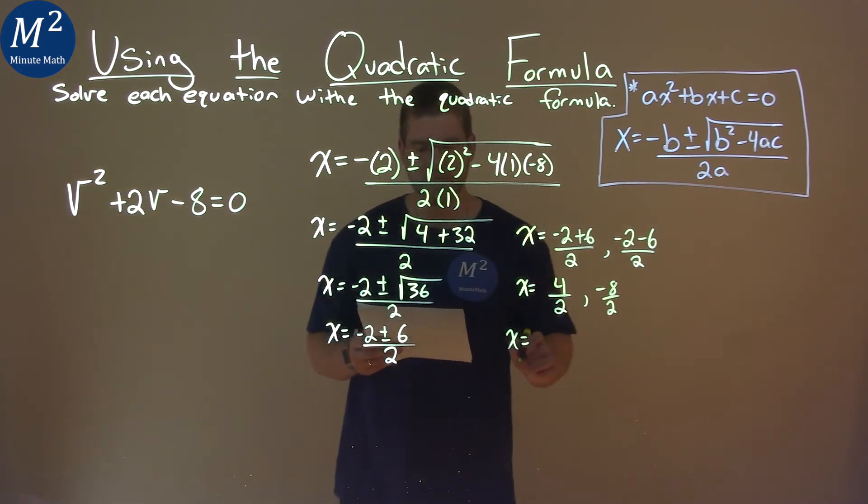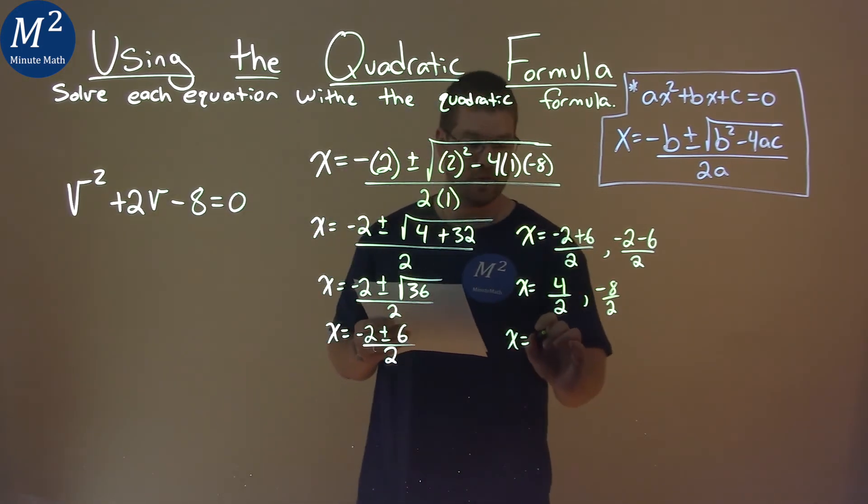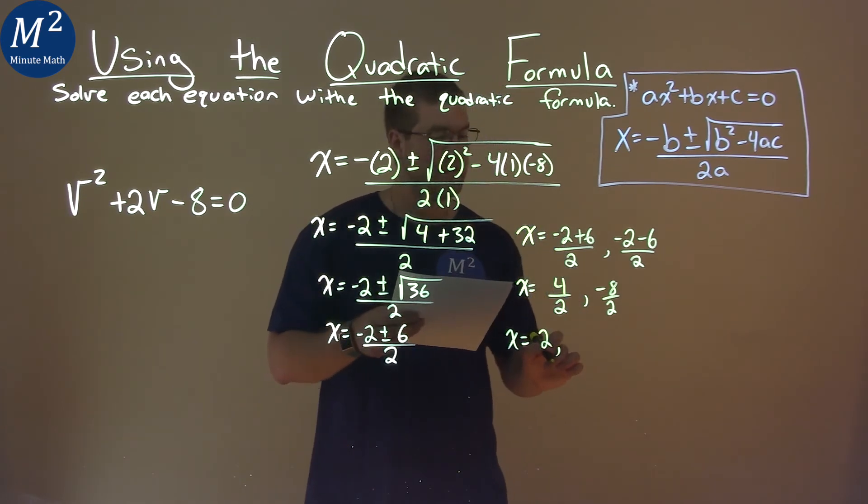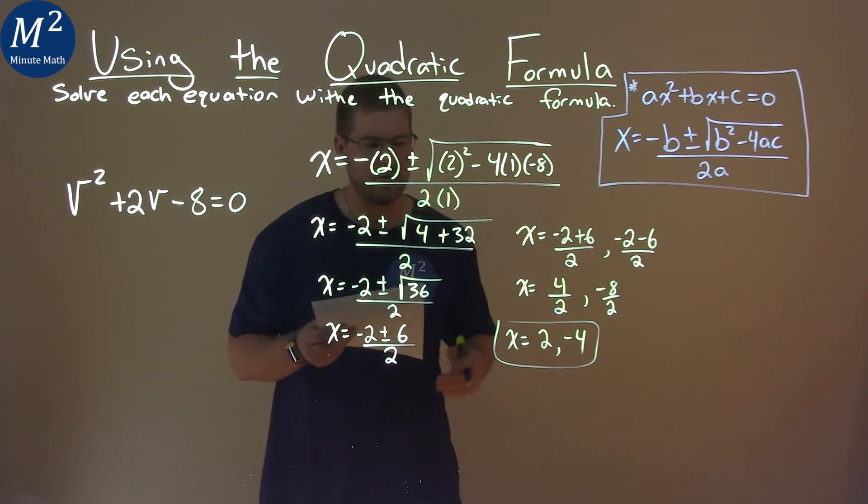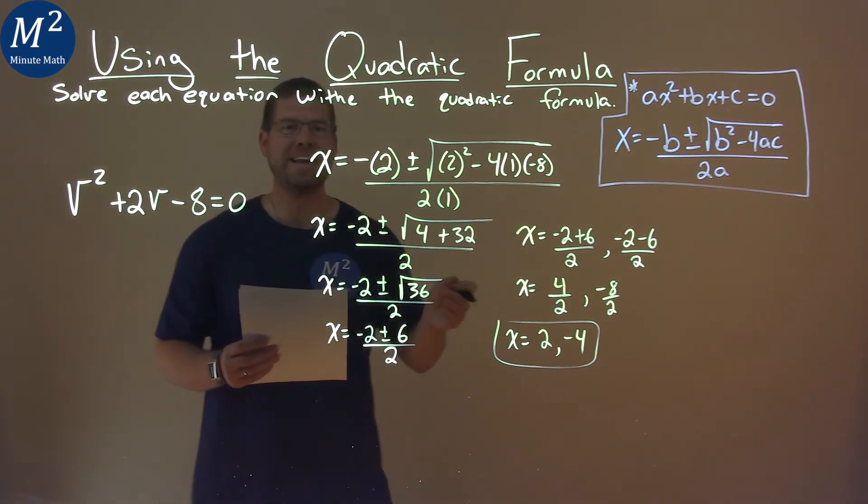So then simplify each one of those fractions, and 4 divided by 2 is 2, and negative 8 divided by 2 is a negative 4. And so my final answer here is x equals 2, and negative 4.